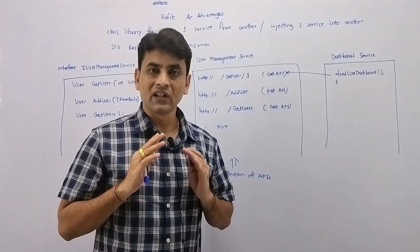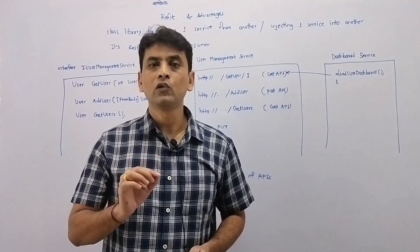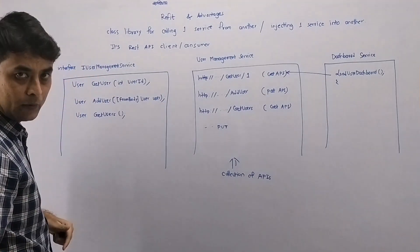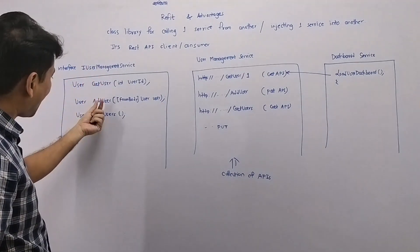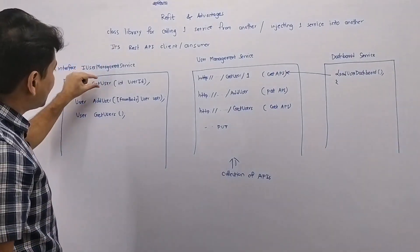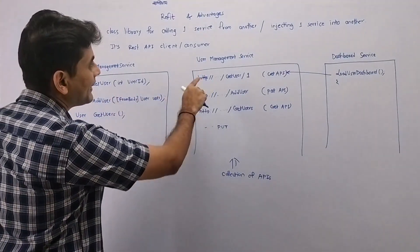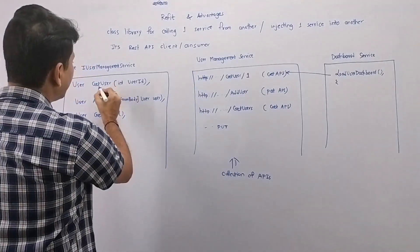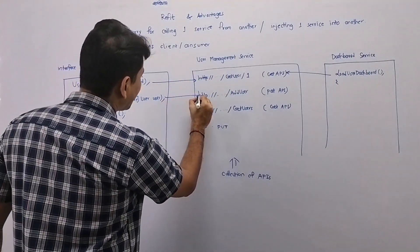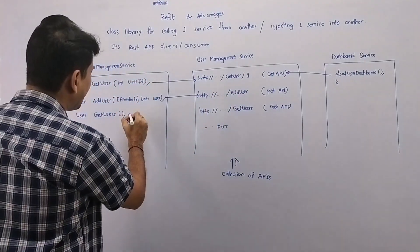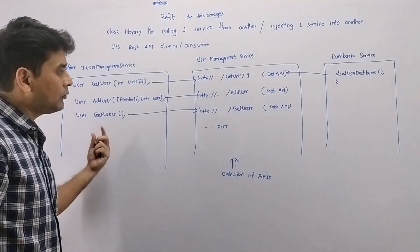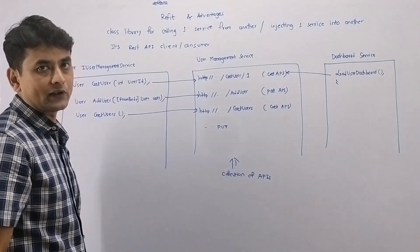For calling one service from another, we can use Refit. We will first create an interface called IUserManagementService with methods: Get User, Add User, and Get Users. Each of these methods will link to the respective API in the User Management Service. For example, Get User will associate with the Get User API, Add User with the Add User API, and Get Users with the Get Users API. We can have additional methods as well corresponding to additional APIs in the User Management Service.